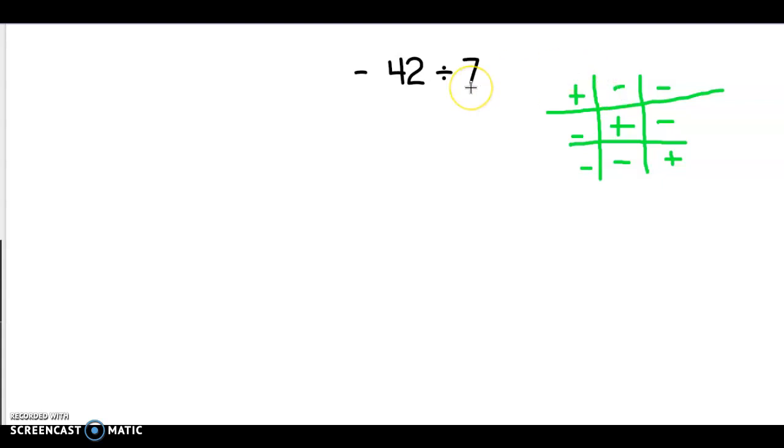And then I go back to my problem and I realize, I'm going to change colors just to help you see this better, that we have a negative here divided by a positive 7. Now remember it's positive because there's no sign in front of it. If there's no sign in front of it then it's automatically a positive number.